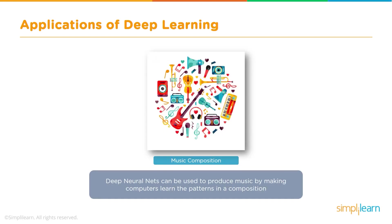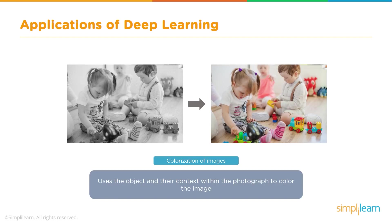A few other upcoming areas include synthesizing done by neural nets, such as music composition. You can train a neural net to compose music — this is still an emerging area but it has been proved possible. On similar lines, colorization of images: a grayscale or black-and-white image can be colored by a deep learning application. As you can see, it does a very good job of applying colors, and obviously it was trained to do this colorization.